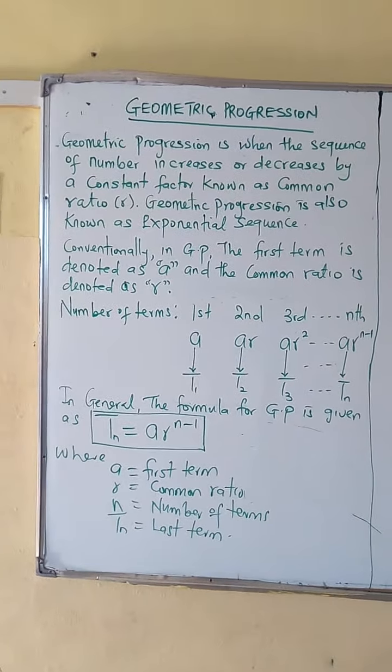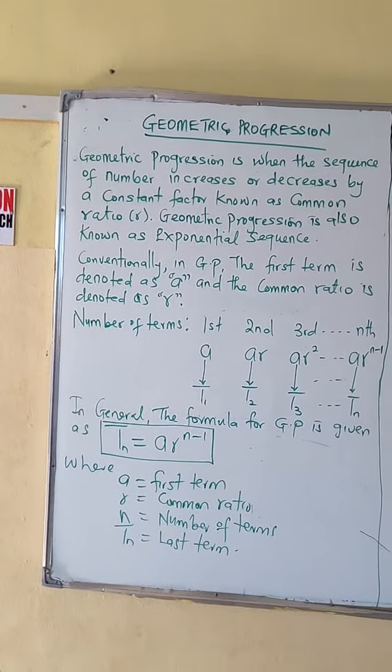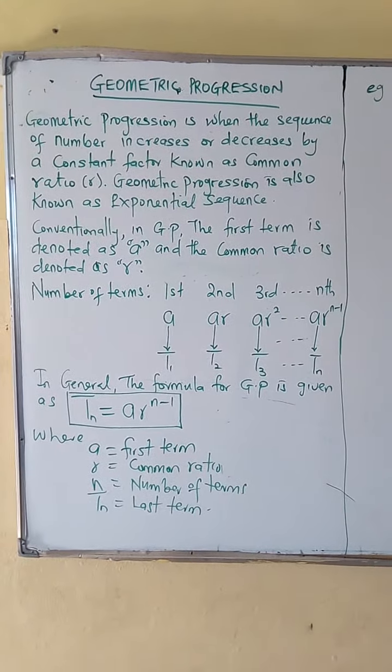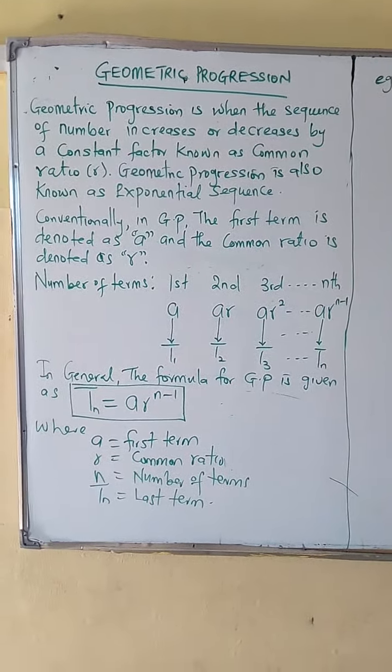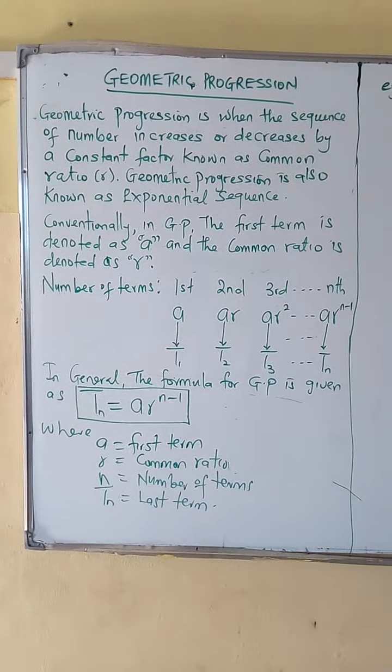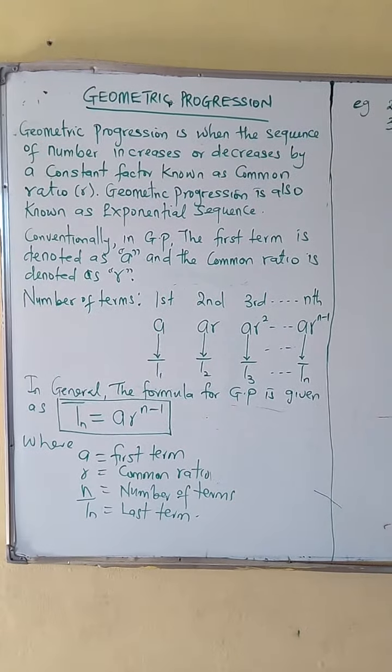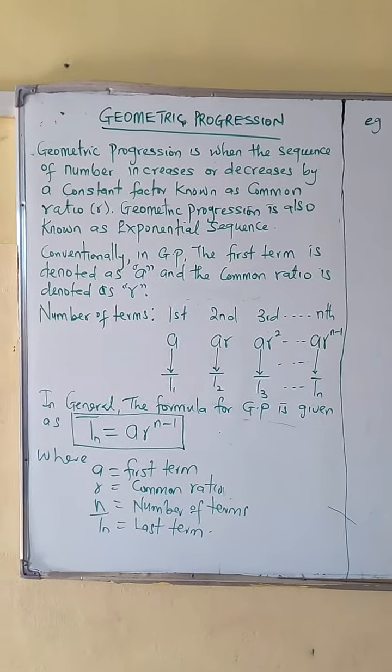Let us look at geometric progression. This is when the sequence of numbers increases or decreases by a constant factor known as common ratio. Geometric progression is also known as exponential sequence.